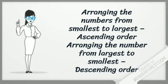Arranging the numbers from smallest to largest is known as ascending order and arranging the numbers from largest to smallest is called descending order.